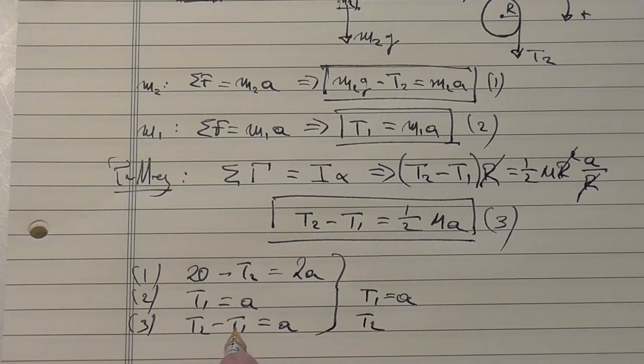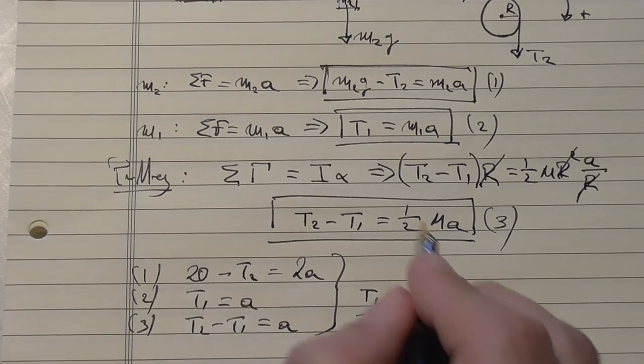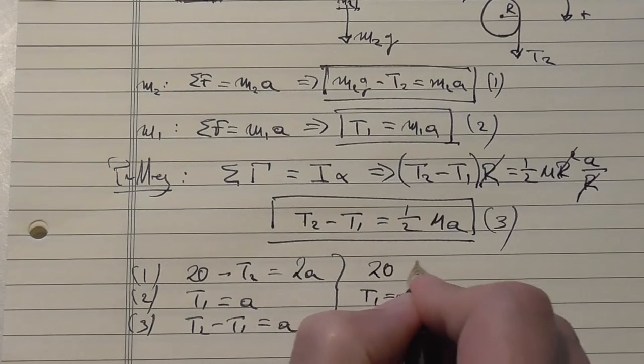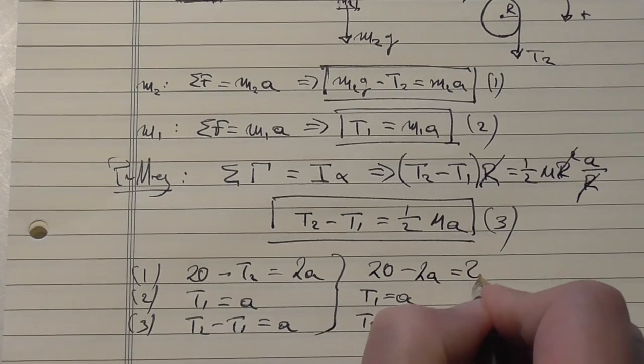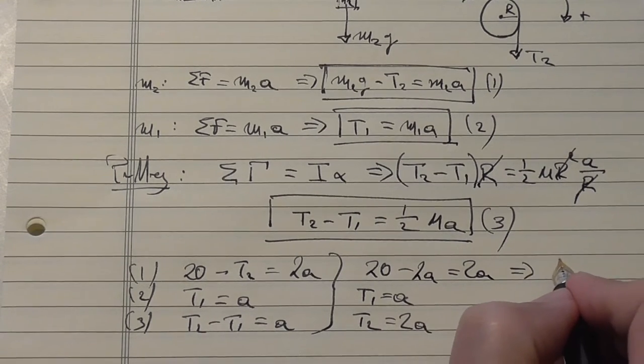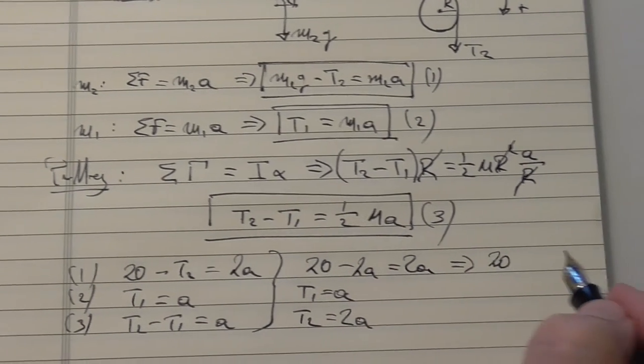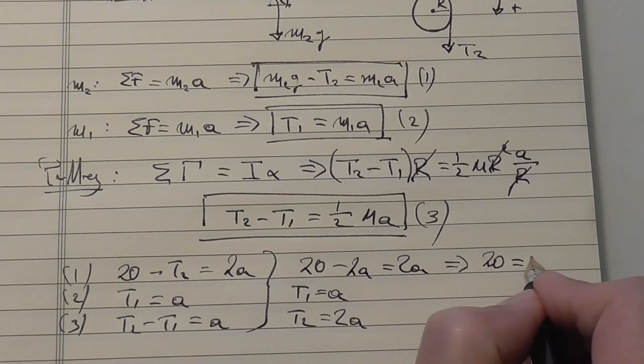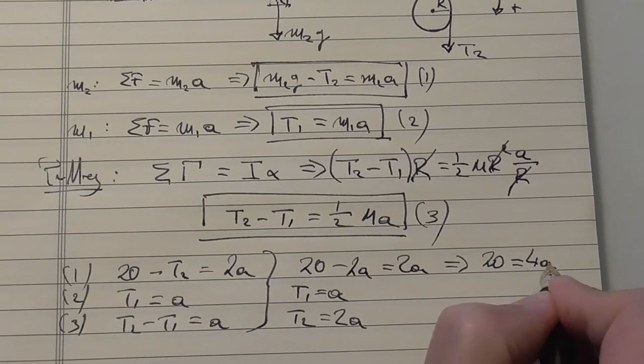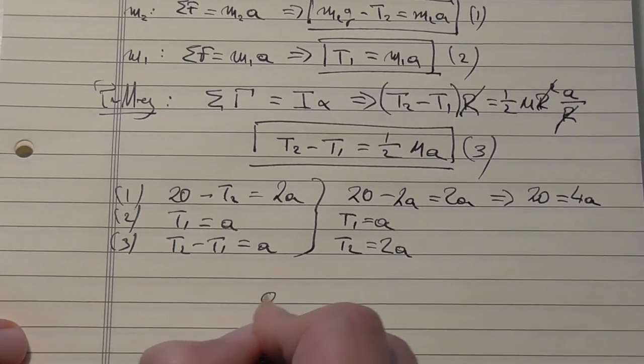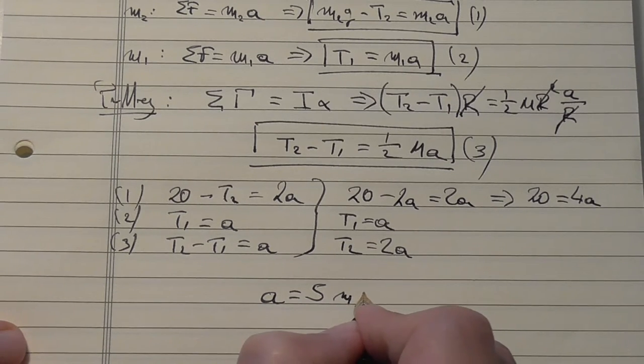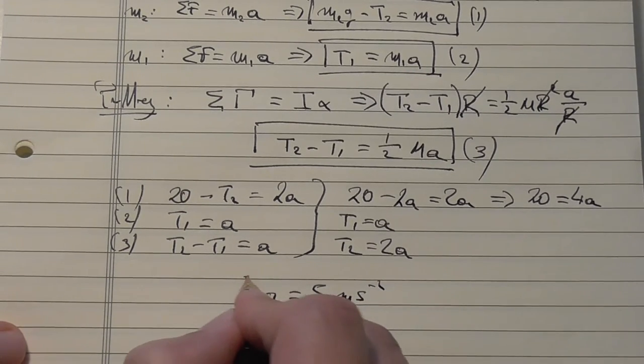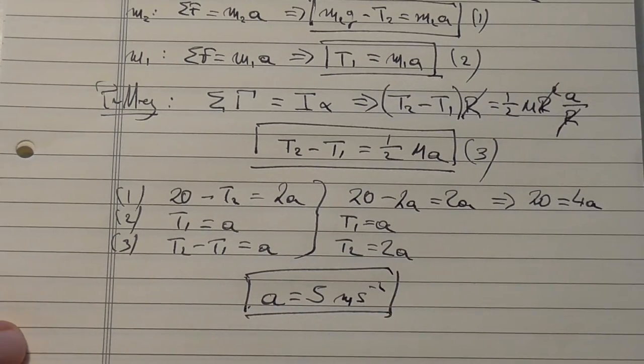I just love the sound. Let's put some values, because we have numbers for the masses now. We get from the first equation that 2 times 10 is 20 minus tension 2 is equal to 2a. From the second equation, we get just T1 is equal to a. Third equation, we get T2 minus T1 is equal to a. We can solve this system of equations. It's actually simple.